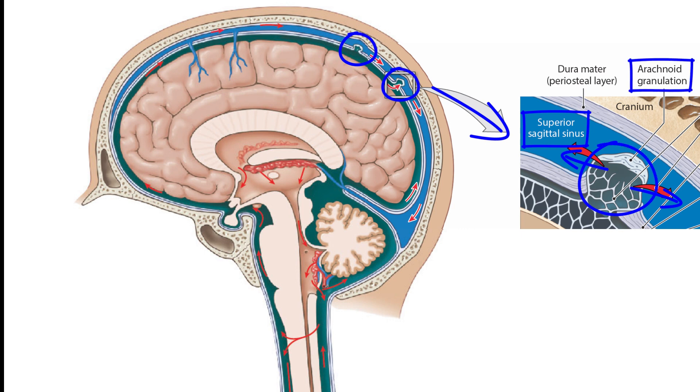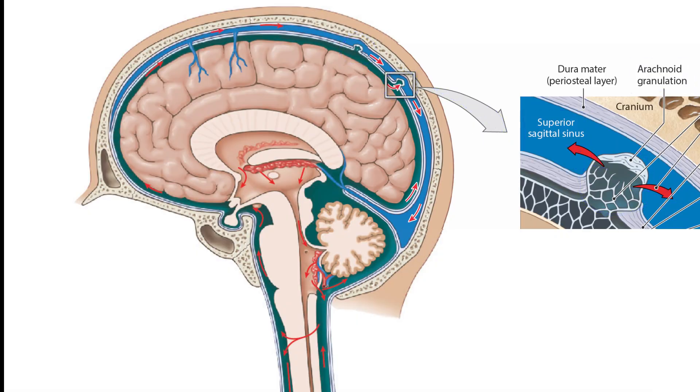Once within this sinus, the CSF is now part of the circulatory system's venous return to the right side of the heart.